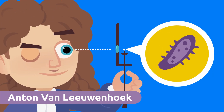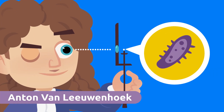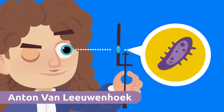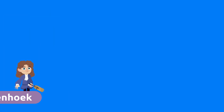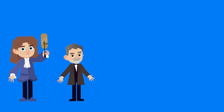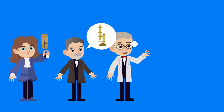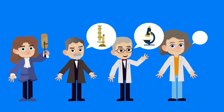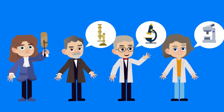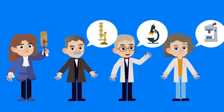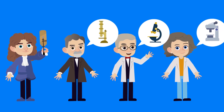Anton van Leeuwenhoek was the first investigator to start observing microorganisms in the 17th century. Microscopes and the investigations done with them allowed other scientists to continue learning how diseases were caused or how they could be cured.